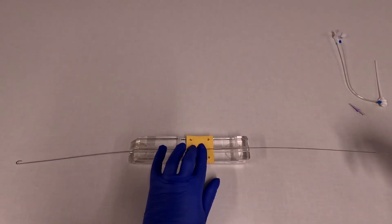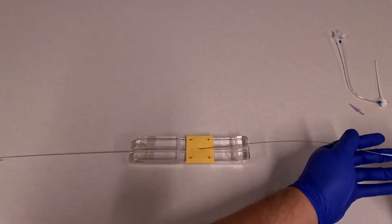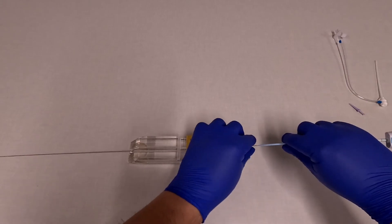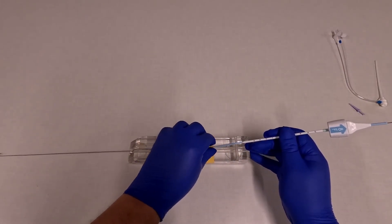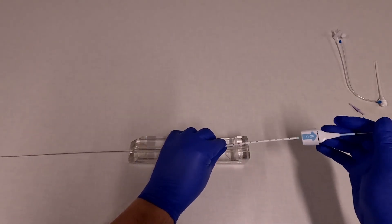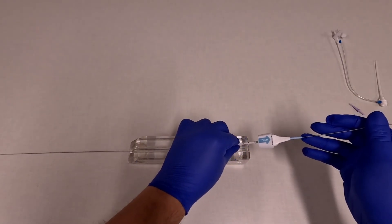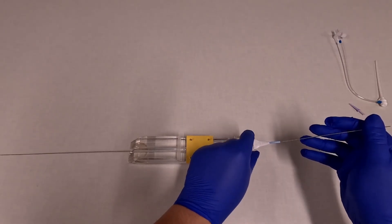The next step is to load the AngioSeal introducer onto the wire. Usually you'll have a second person that's able to help you with this. But I'm doing it by myself here. Remember that in reality you would have to continue to maintain hemostasis at the site. Make sure that you have wire coming out of the proximal port of the introducer. And then insert the introducer through the entry site of the skin into the arteriotomy.